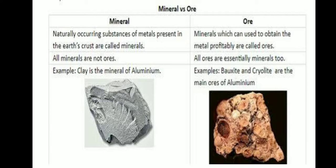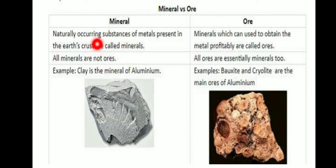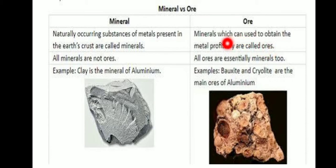Very important — three more questions. Distinguish between minerals and ores. What is a mineral? Naturally occurring substances of metals present in the earth's crust are called minerals. What is an ore? Minerals which can be used to obtain the metal profitably are called ores.